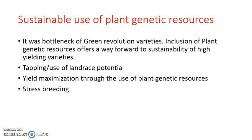Next is the use of land race potential. We can use their ability to adapt to the environment and their genetic variations to make a land race more adaptable, improving the sustainability of newly developed varieties. Yield maximization through plant genetic resources is also key: by modifying genetic material and using different breeding techniques involving molecular biology, we can maximize production and provide more food to improve food security.